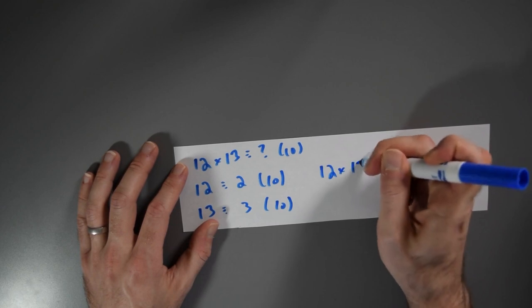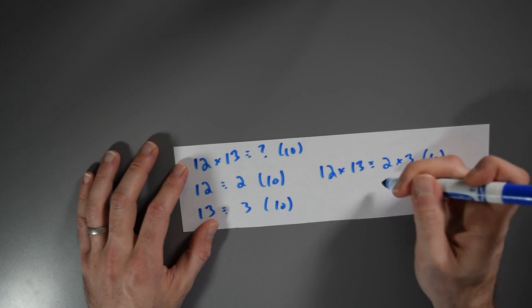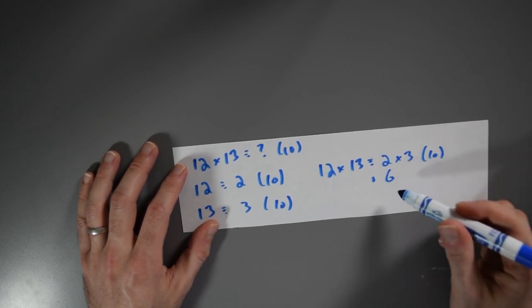So 12 times 13 is, well, 12 times 13 will be congruent to 2 times 3 modulo 10. And that's pretty easy. That's the same thing as 6.